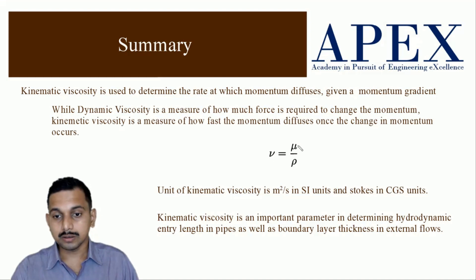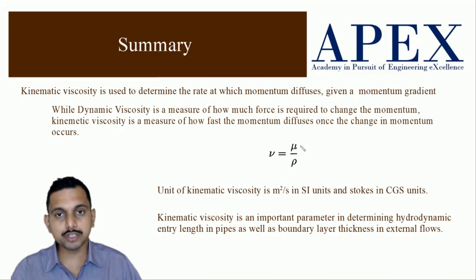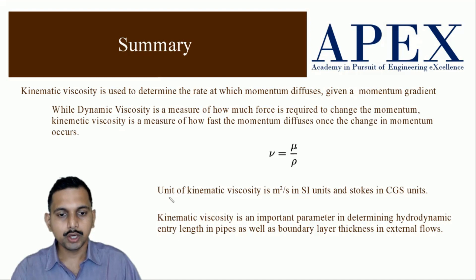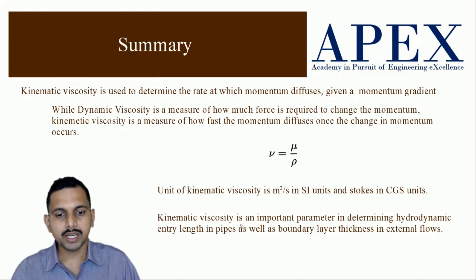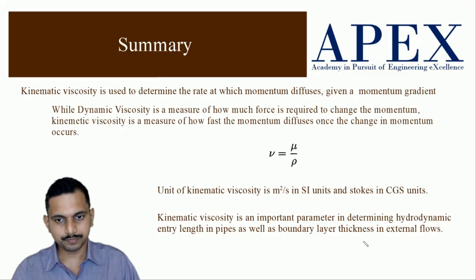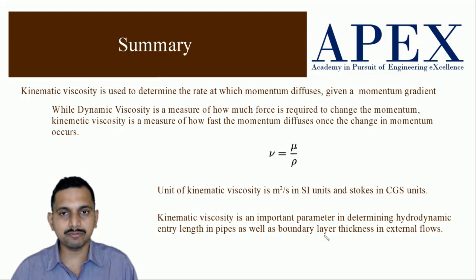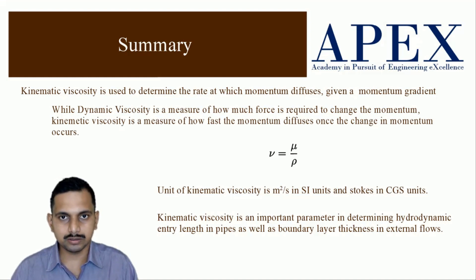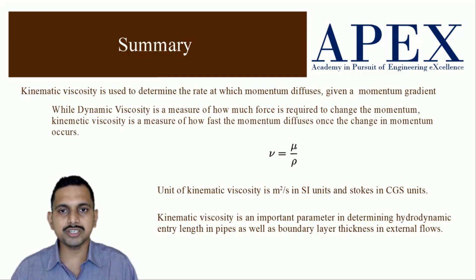Kinematic viscosity is the ratio of dynamic viscosity to density — more density means less kinematic viscosity because there is more inertia; more viscosity means more kinematic viscosity because it helps momentum transfer by collision or cohesion. The unit of kinematic viscosity is meter square per second in SI units and stokes (centimeter square per second) in CGS units. Kinematic viscosity is an important parameter in determining hydrodynamic entry length in pipes as well as boundary layer thickness in external flows. If you have further queries, please comment below, subscribe to the channel, and click the bell icon for notifications. Thank you very much and best of luck.